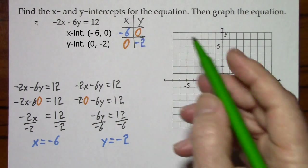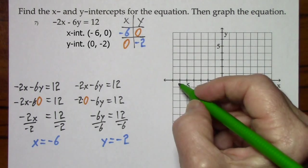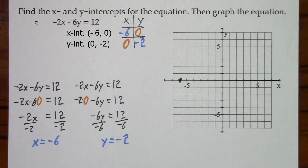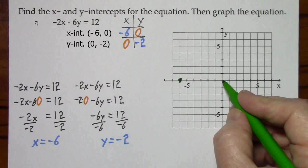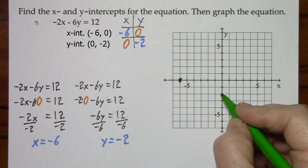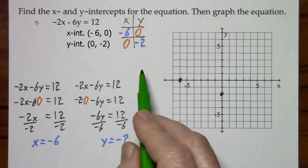When x is negative 6, y is 0, negative 6, y is 0. When x is 0, y is negative 2, 0, down 2. And I could draw the line.